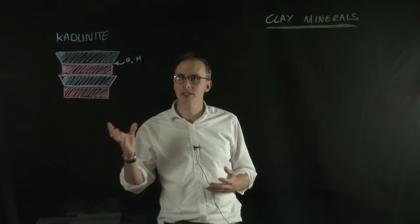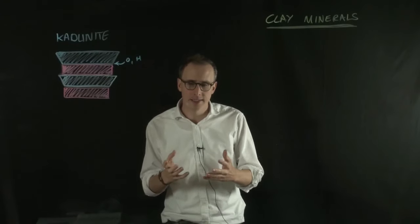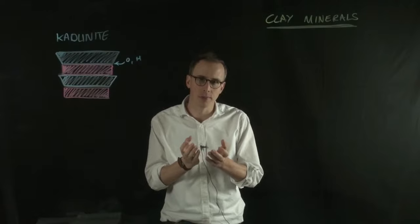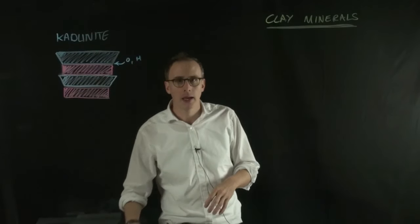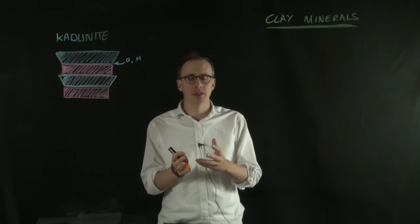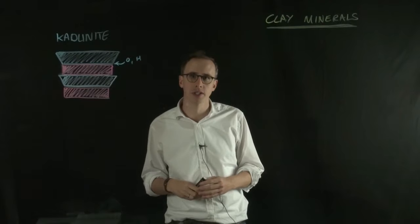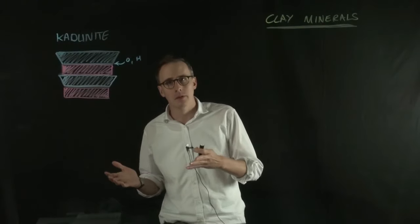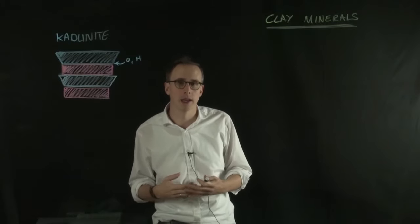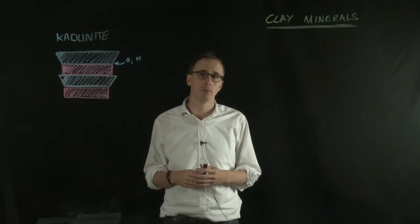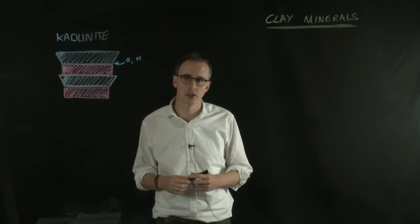What governs this structure change in clay minerals is really the underlying need for minerals to maintain charge balance within the structure. And they have to maintain that charge balance with changes in element substitution. For some of the illites and montmorillonite-type clays, the aluminum is replaced by magnesium. And you have a three-plus charge being replaced by a two-plus charge.